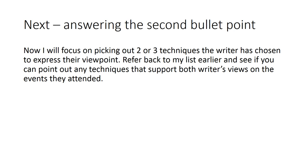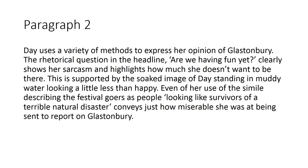Now answering the second bullet point: go back to the passage and try to pick out two or three different language features — it can be structural, sentence forms, headlines, pictures, descriptive, or rhetorical. Here's what I've picked out from Source A: the rhetorical question in the headline, which I thought was quite good; the use of the image, which I thought was important; and the simile. I've picked three examples and written a little bit of analysis for each without going into huge amounts of detail, mainly because I haven't got time. I've embedded my quotations to make life easier. In this paragraph I haven't done any comparison yet — I'm just writing about the language techniques in Source A.